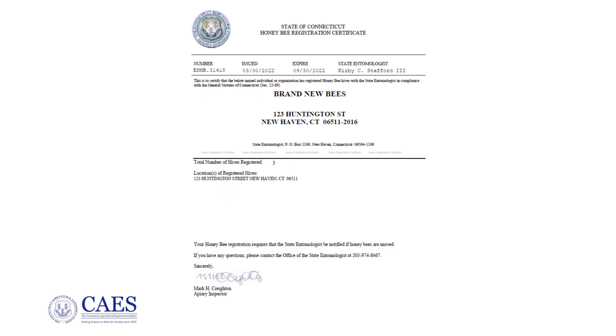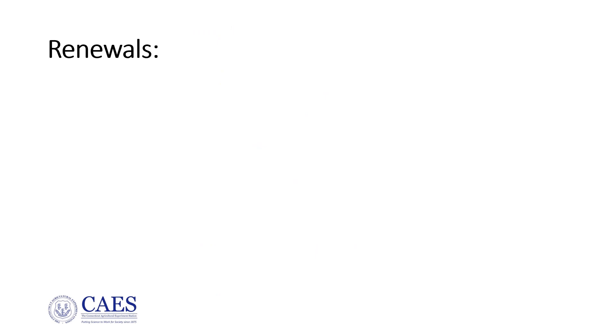Your application is approved and your certificate is the attachment. You may print as many copies of your certificate as you need — you will not receive the certificate by US mail, but as an attachment to this email. Your certificate lists your credential number, the ENHB number, and the total number of hives and their locations.